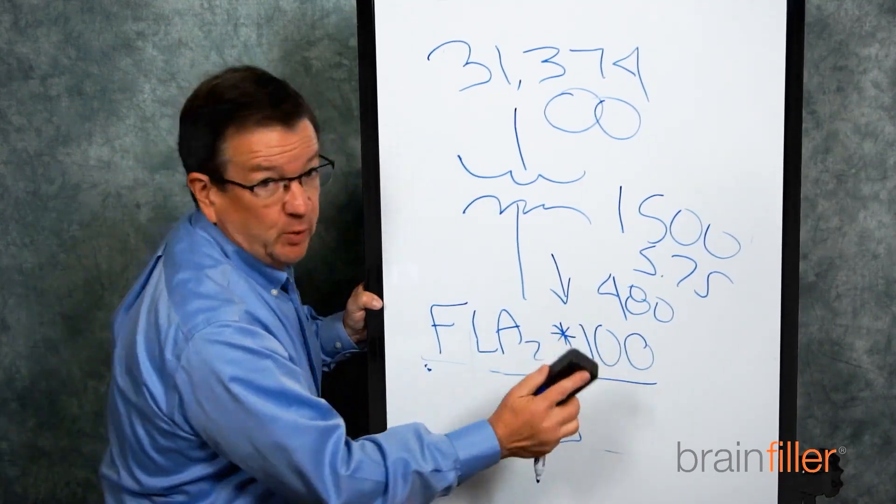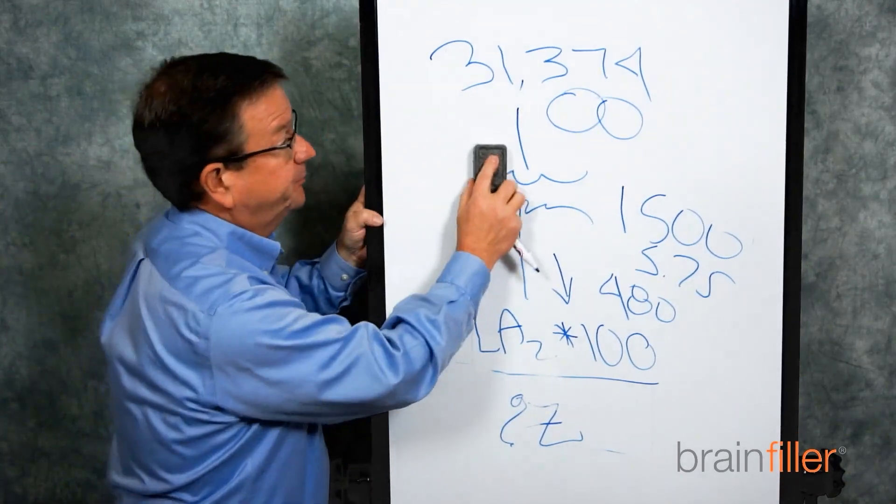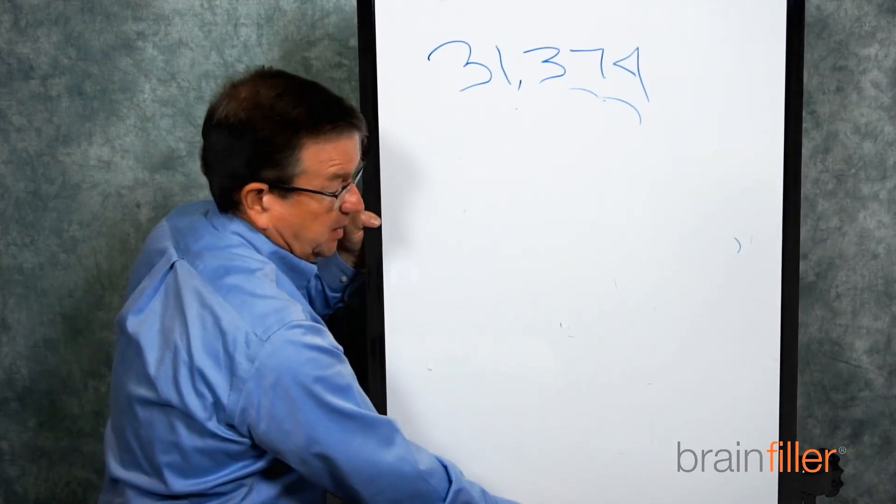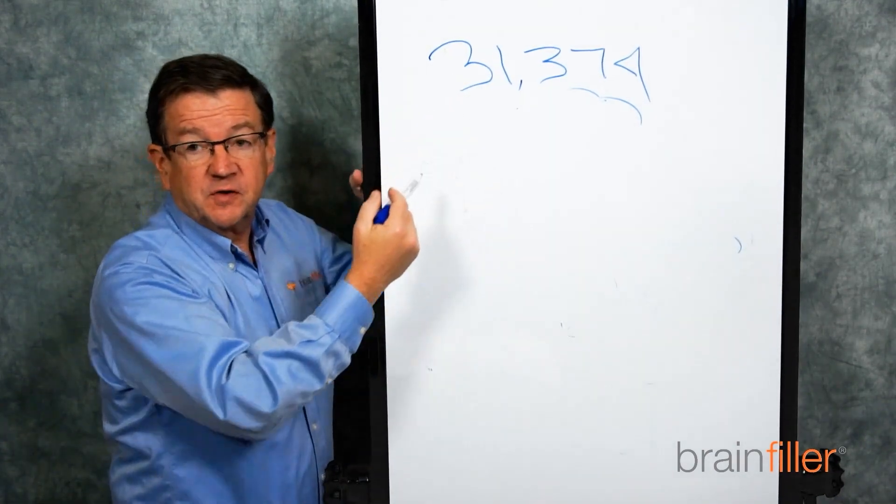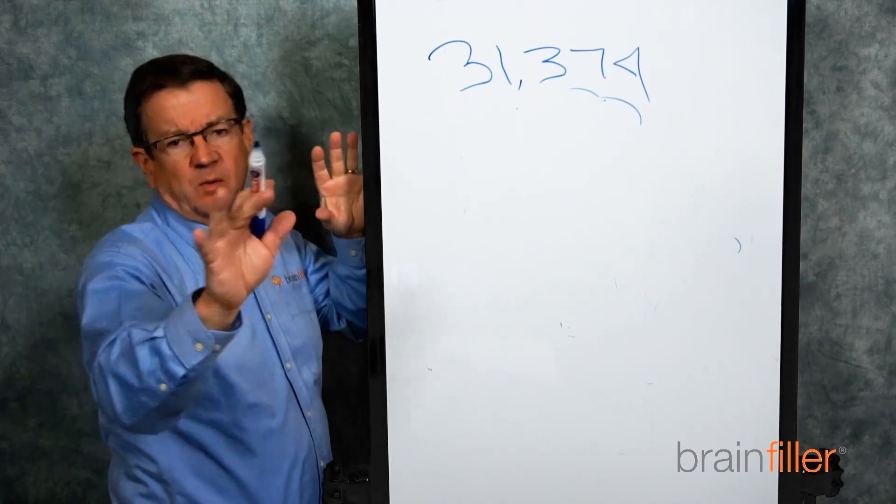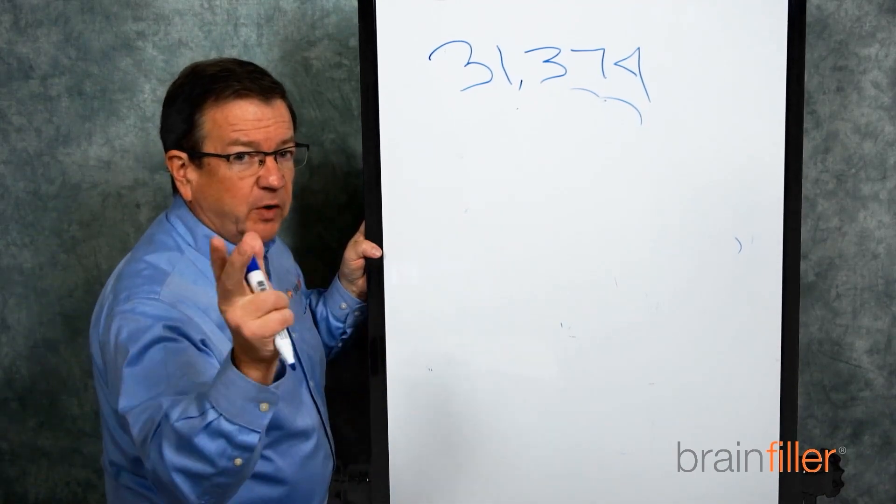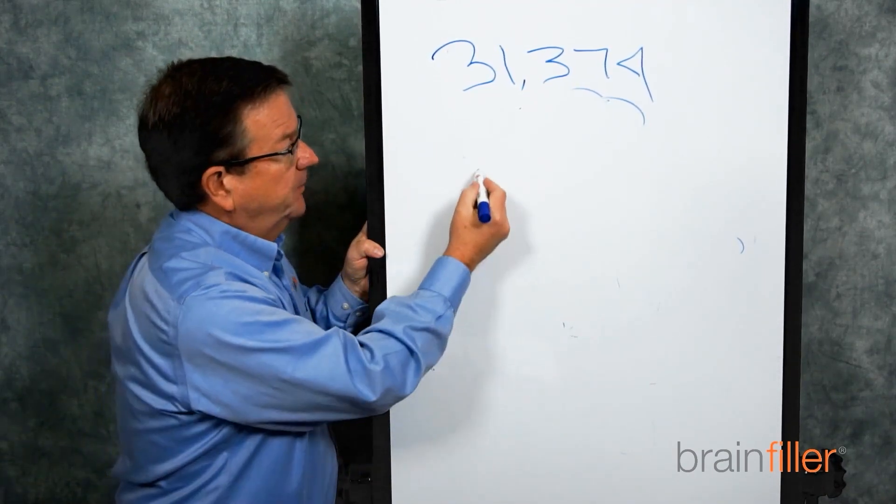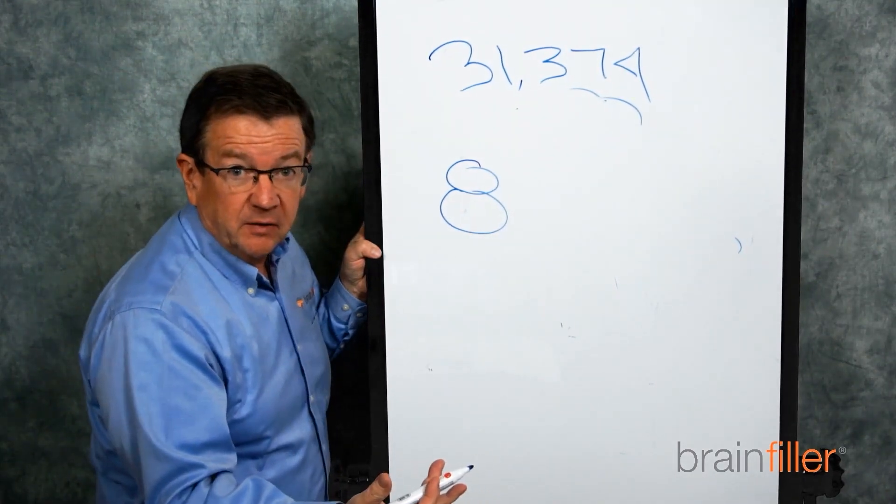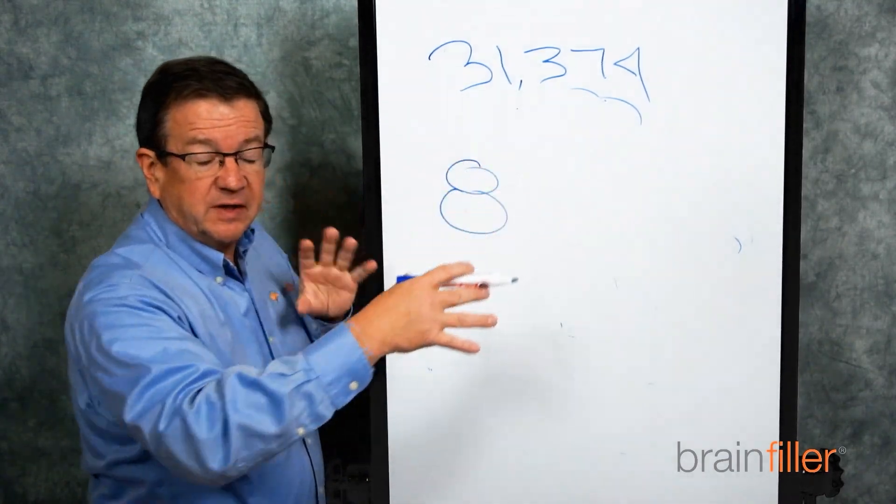So what you do with this, as far as an arc flash study, if that's all you have to go on, the next step is begin your study with the infinite source, 31,374. Many people say, oh, you're not supposed to do that. I'll explain what that's all about in a moment. Run your study, and what you're doing, going back to what I talked about earlier, is look at what is the arc rating of the PPE that you're targeting. Let's say it's 8 calorie.